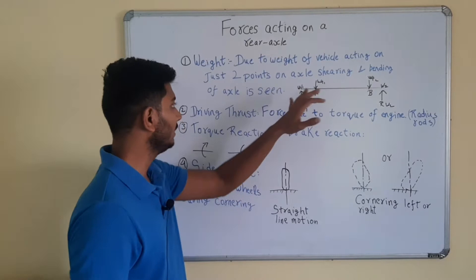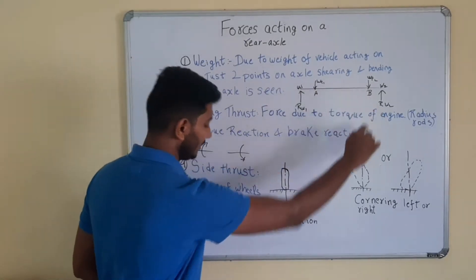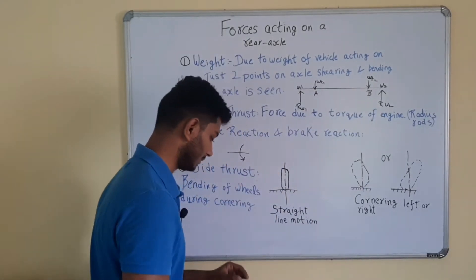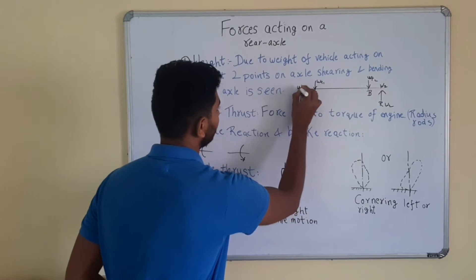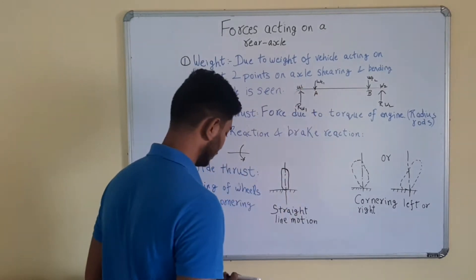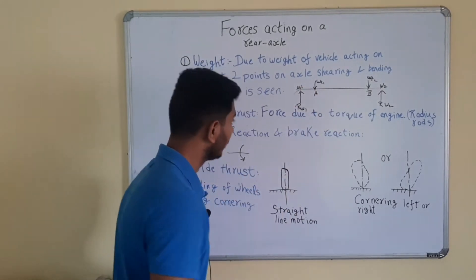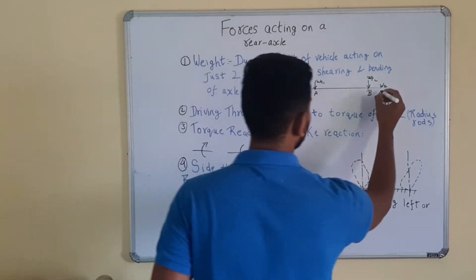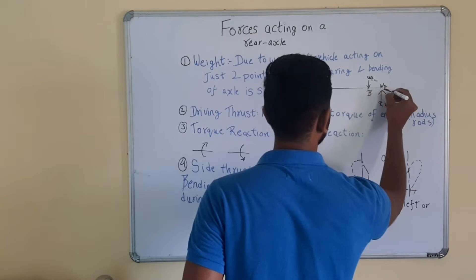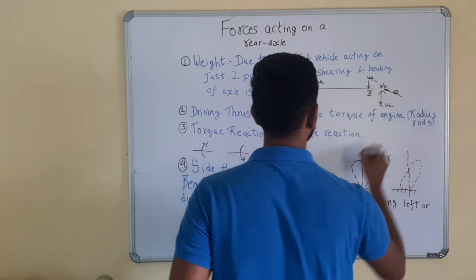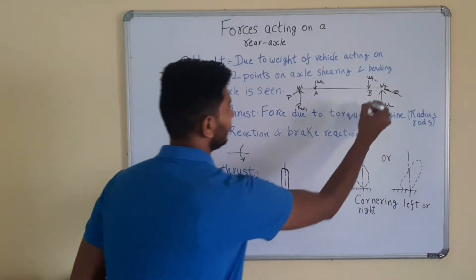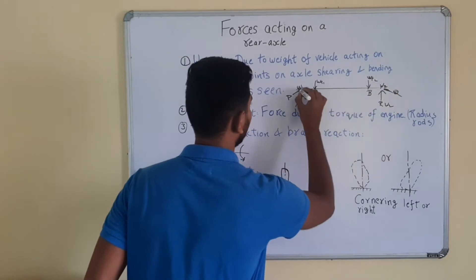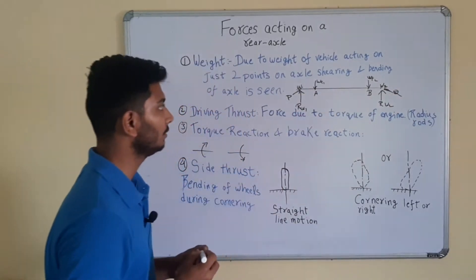So let us see. This is the axle for example. Let me name it. This one is point P. This one is point Q. So P, Q is the axle.